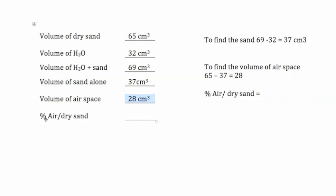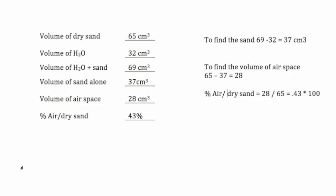Now, to calculate the percentage of the air that is in dry sand, you take the air, which is 28 cubic centimeters, divide it by the dry sand, which is 65, and then because we want a percentage, we multiply by 100, and we get 43 percent. And it's as simple as that.